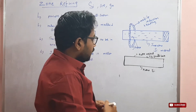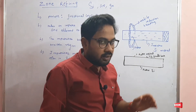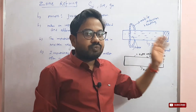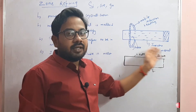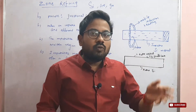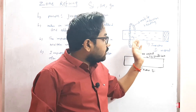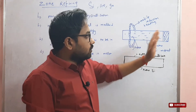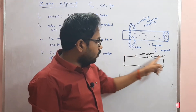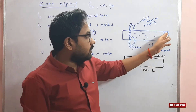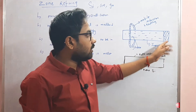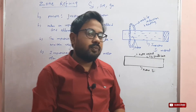We do this not just one time — the process is repeated two or three times, moved in the same direction. The impurities are collected in one place at the end. The result is a pure silicon metal bar after repetition.